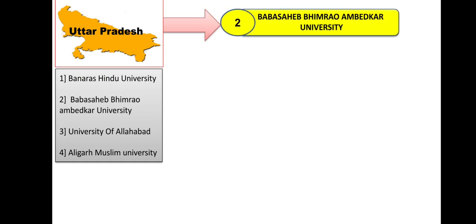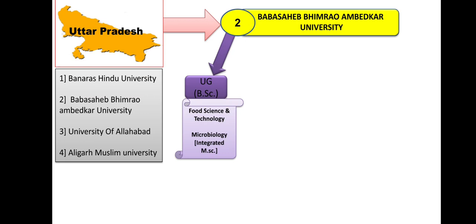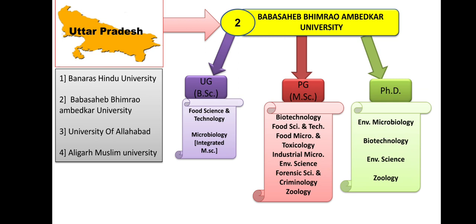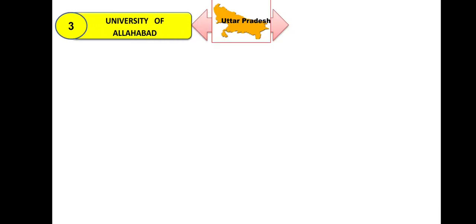Second UP university is Babasaheb Bhimrao Ambedkar University — a very good university for Biological Science students with many courses available. BSc is in Food Science and Technology; also Integrated MSc (BSc plus MSc) in Microbiology. Standalone MSc is available in Biotechnology, Food Science and Technology, Food Microbiology and Toxicology, Industrial Microbiology, Environmental Science, Forensic Science and Criminology, and Zoology. PhD options include Environmental Microbiology, Biotechnology, Environmental Science, and Zoology. They have their own entrance examination.